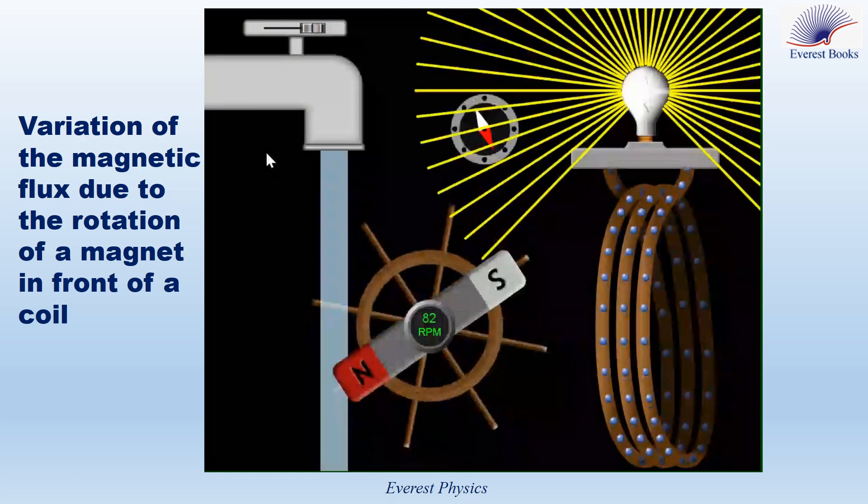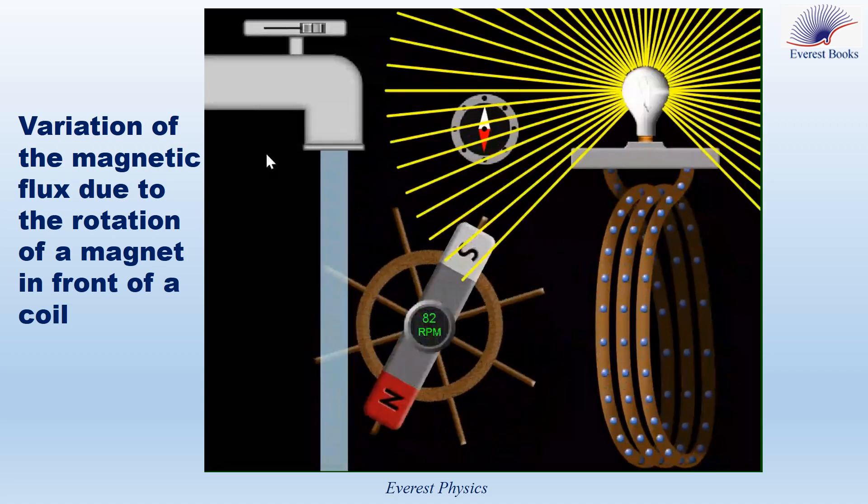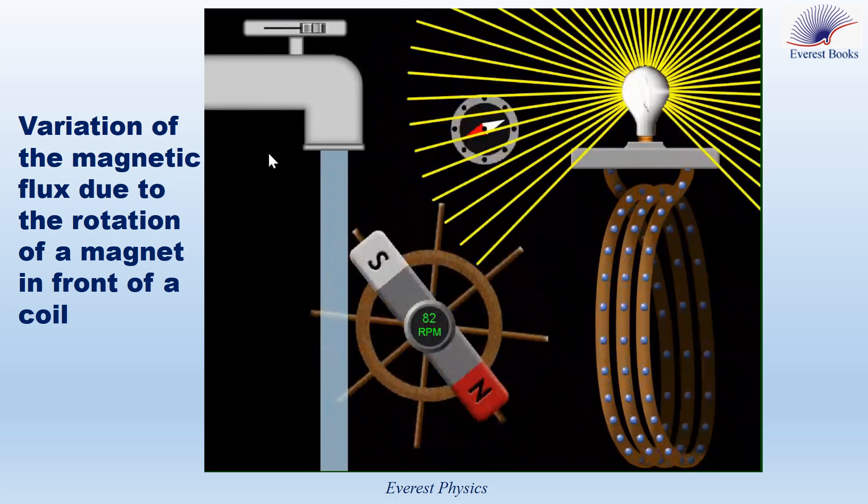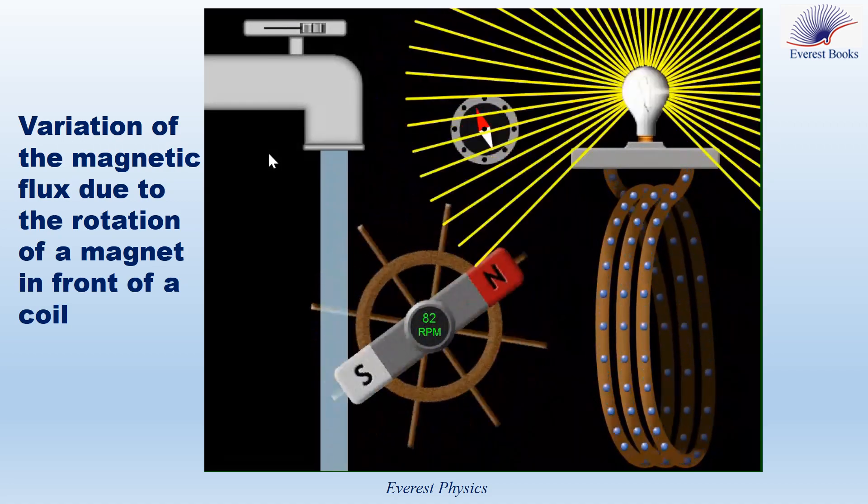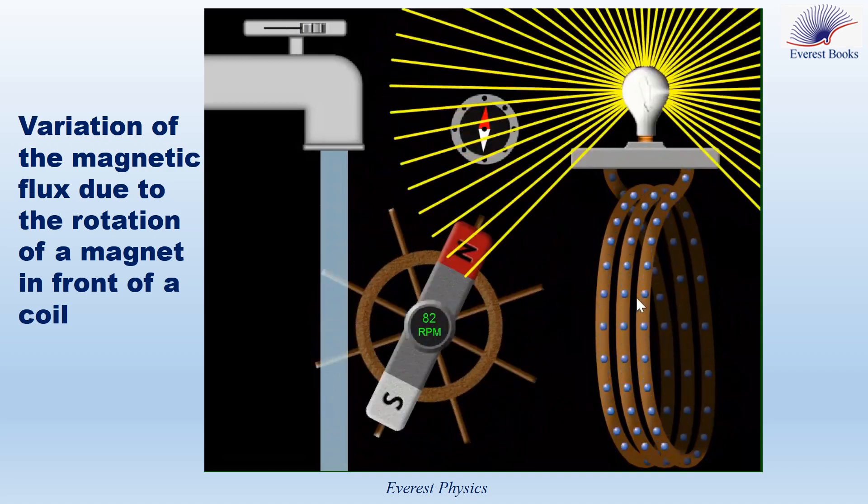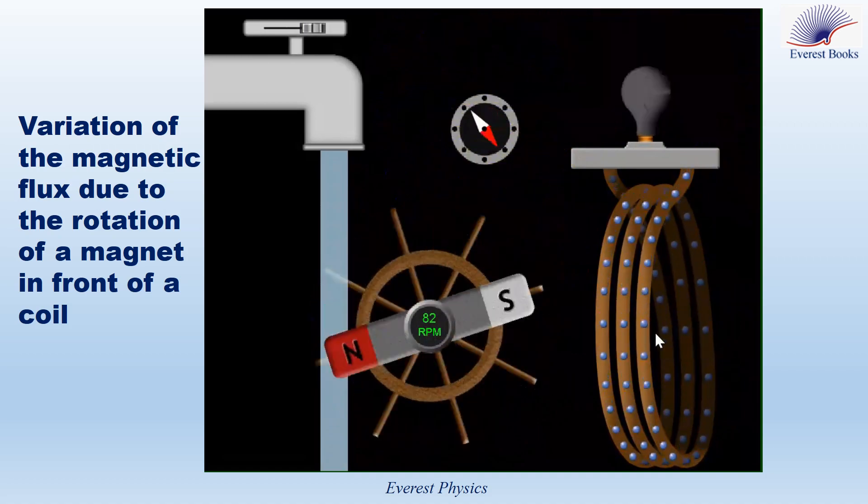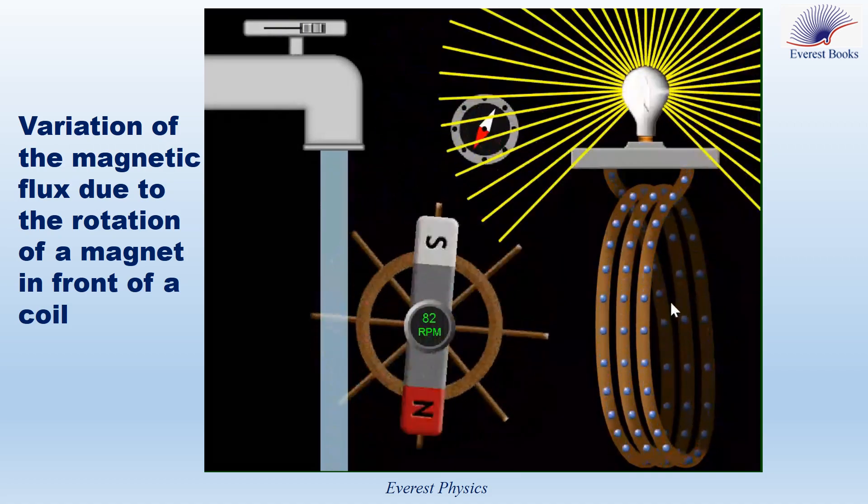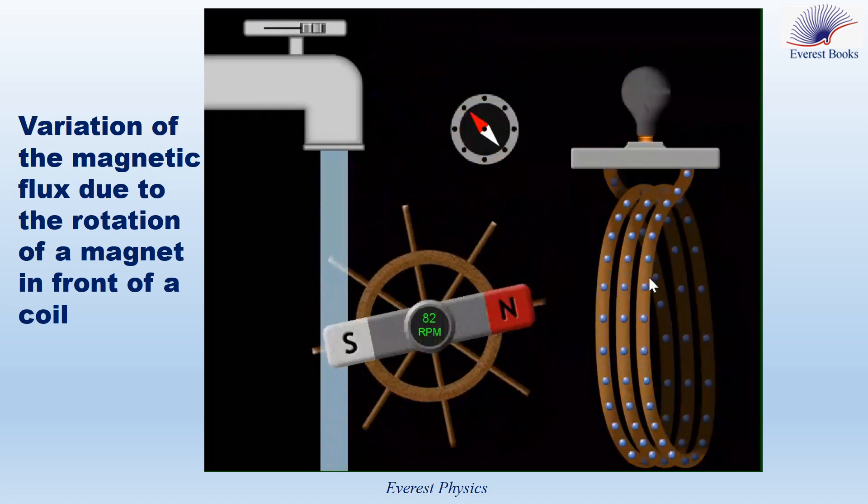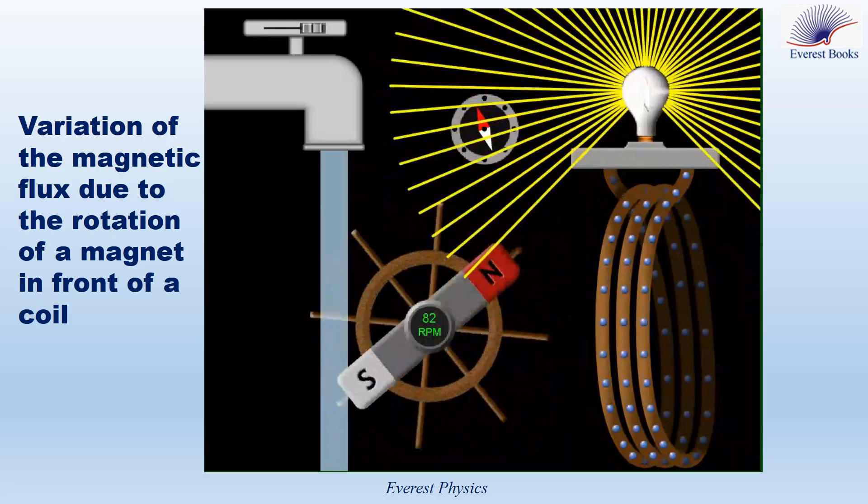The falling water causes the magnet to rotate and the lamp glows. During rotation of the magnet, the magnetic field at each point on the coil varies, so the magnetic flux crossing the coil varies. Then an electromotive force is induced in the coil and the lamp glows.